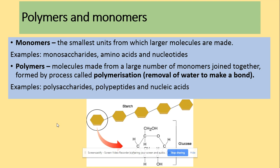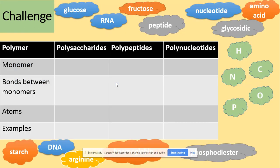Revisiting the definitions: monomers are the smallest units from which larger molecules are made — monosaccharides for carbohydrates, amino acids for proteins, and nucleotides for nucleic acids. Polymers are molecules made from a large number of monomers joined together by the process of condensation — the removal of water to make a bond. Examples of polymers are polysaccharides, polypeptides, and nucleic acids.